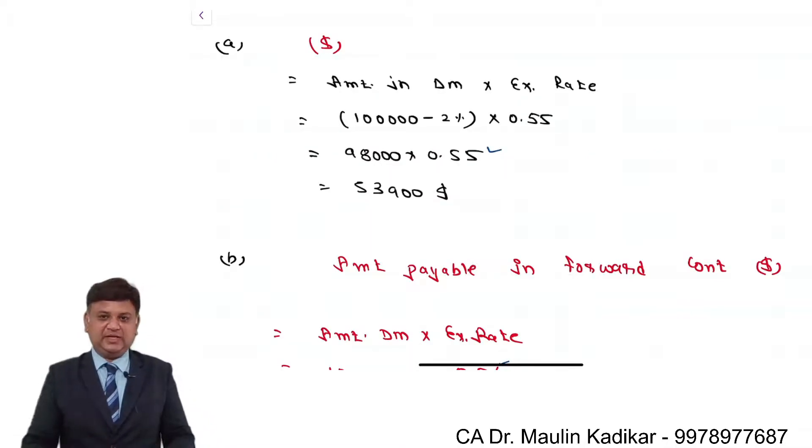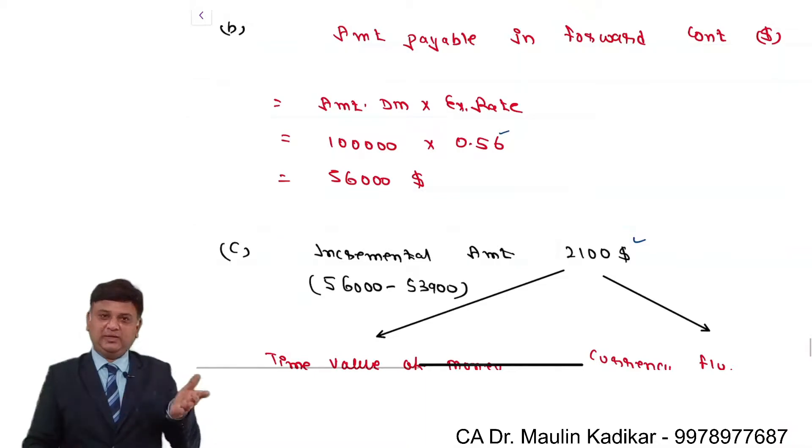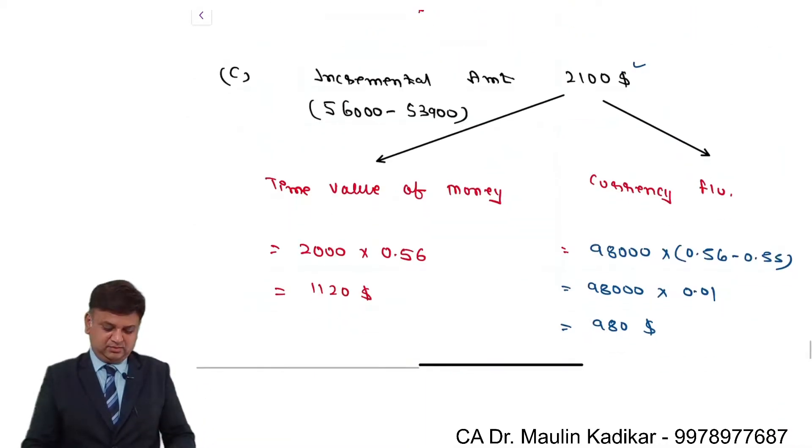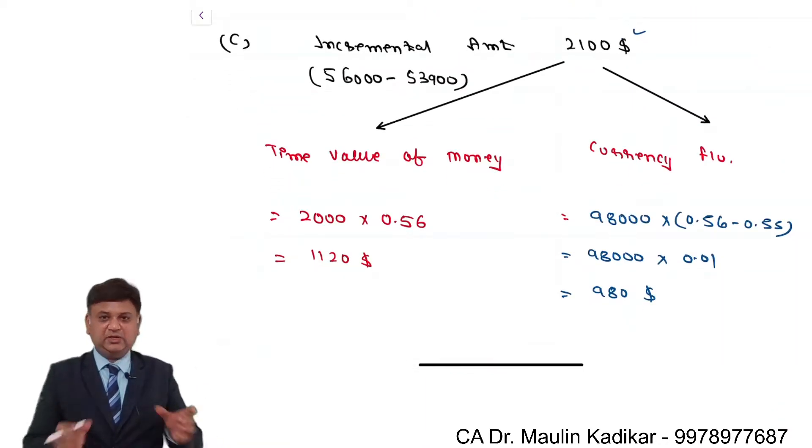Let us have summary of the entire answer. In the A part of the question, we are required to compute the amount if at all we have to pay within this time period of 10 days. Amount pay 1 and forward. So the incremental amount is divided into two parts: one is because of the time value of money, and another is currency value fluctuation.